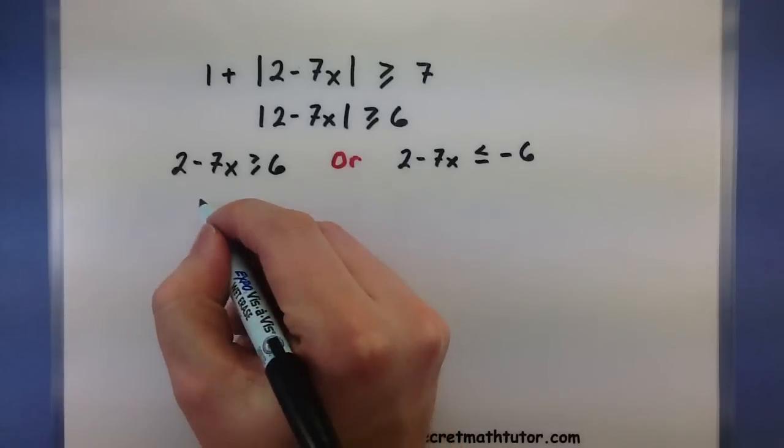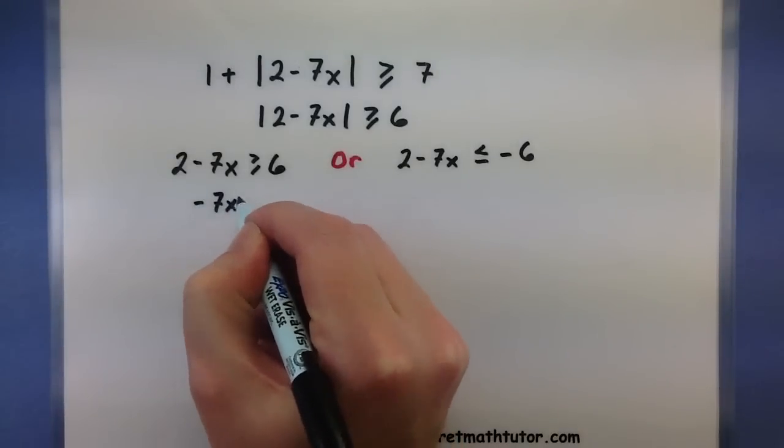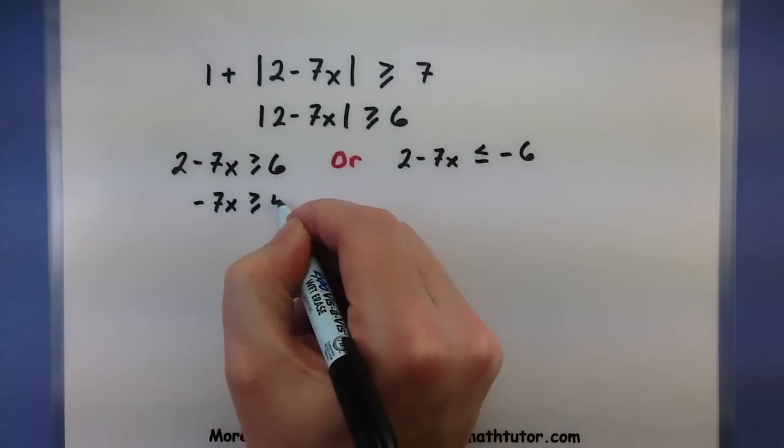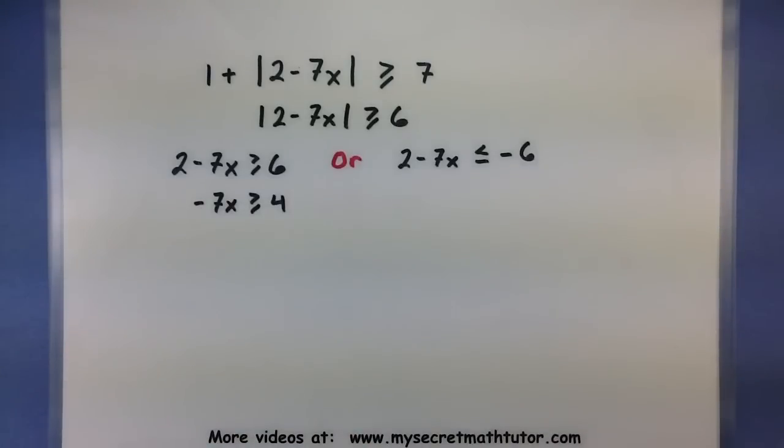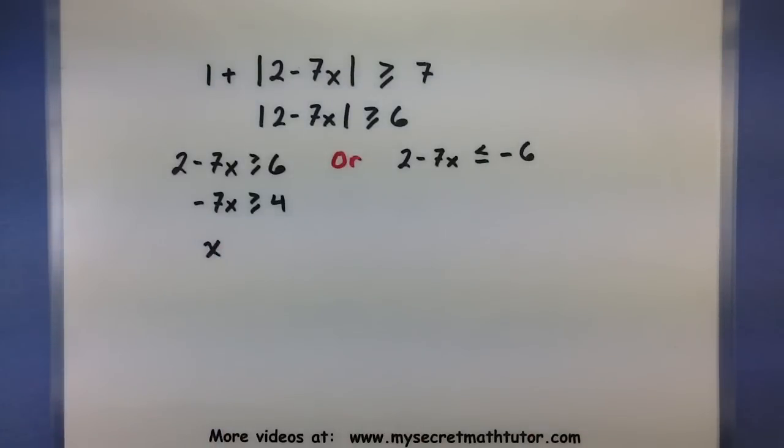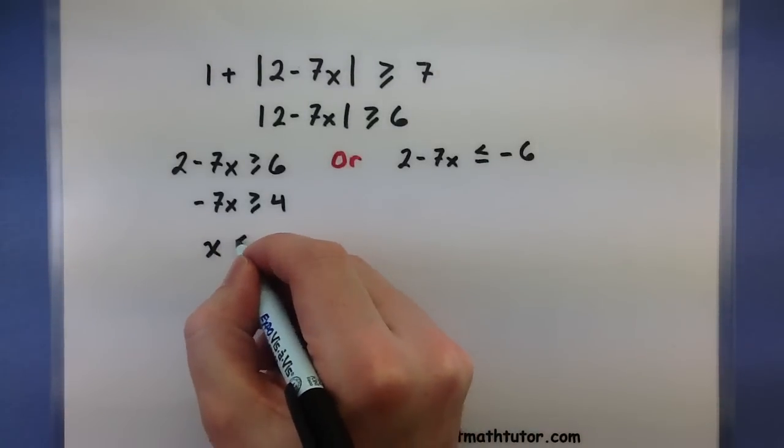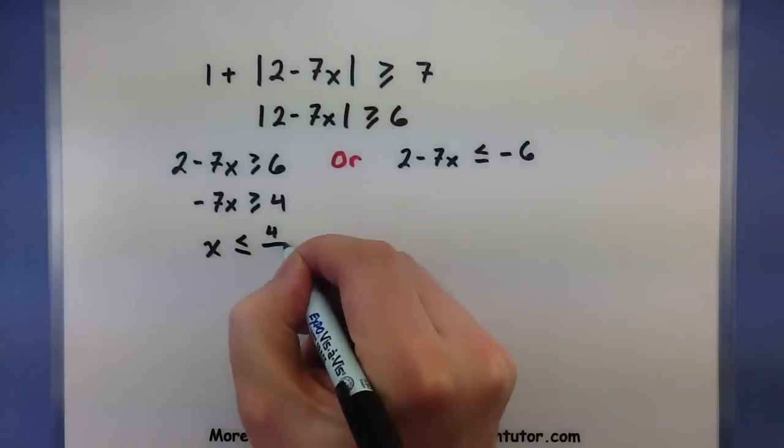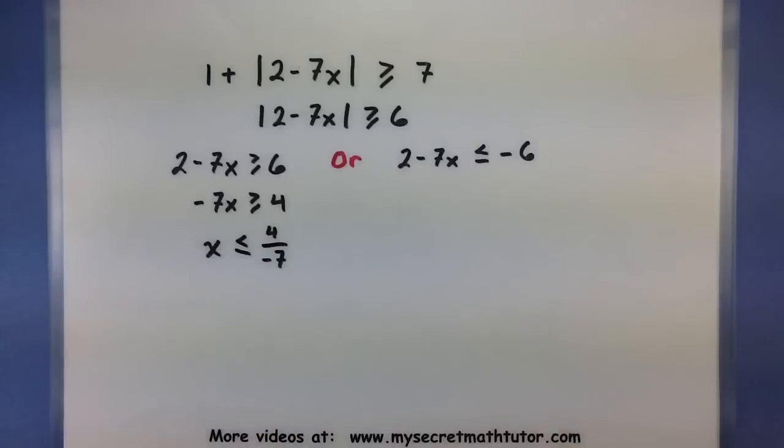I'm going to subtract a 2 from both sides, giving me negative 7x is greater than or equal to 4. And then I'll divide by a negative 7. Note here that since I'm dividing by a negative, I will have to flip my sign. Alright, not too bad. Alright, moving on to the other one.